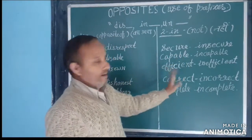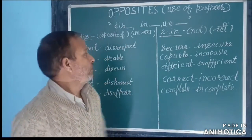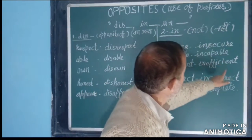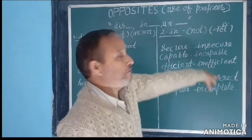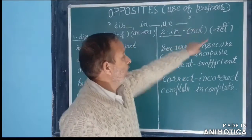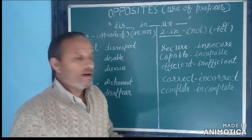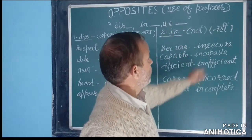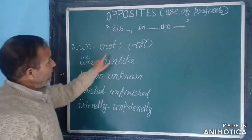Capable (काबिल) → Incapable (ना काबिल/not capable). Efficient → Inefficient, meaning not efficient. Correct (सही/right) → Incorrect, meaning not correct, not right. Complete (पूरा/whole) → Incomplete, meaning not complete, not whole — when we add the prefix IN, it means 'not complete'.